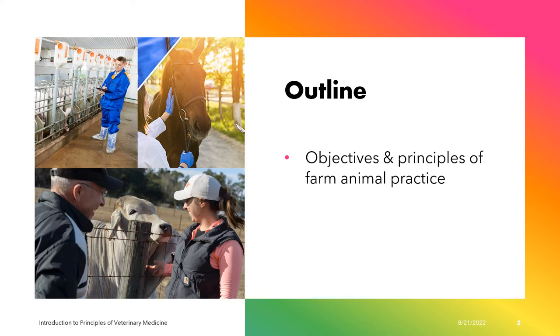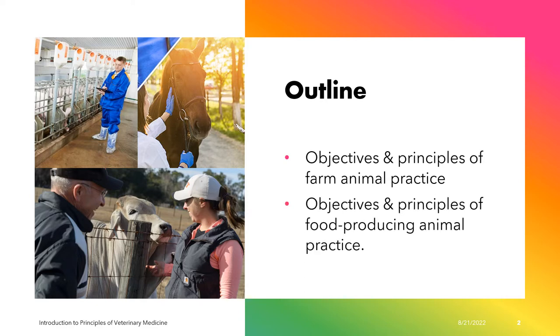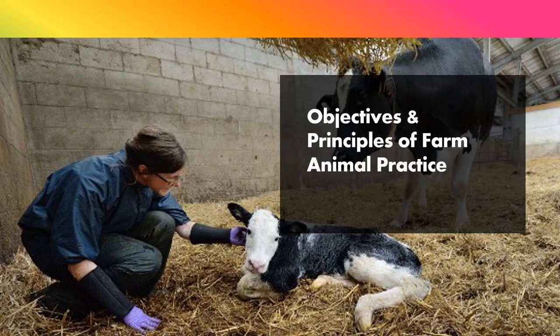Specifically, we are going to deal with the objectives and principles of food producing animal practice. The slides to follow will provide information about the objectives, principles, and the major services that the different farm animal practices provide to the public and to their clients.